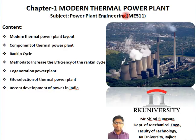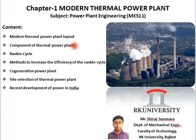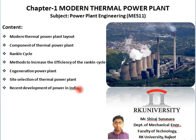The first chapter of this subject is Modern Thermal Power Plant. The content of the first chapter covers: Modern Thermal Power Plant Layout, Components of Thermal Power Plant, Rankine Cycle, Methods to Increase the Efficiency of Rankine Cycle, Co-Generation Power Plant, Site Selection of the Thermal Power Plant, and Recent Development of Power in India. We will study these topics one by one, starting with the Modern Thermal Power Plant Layout.